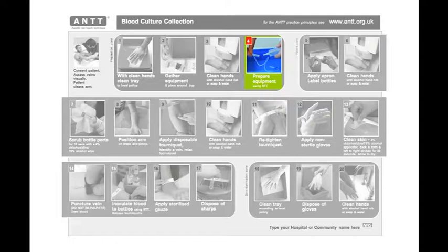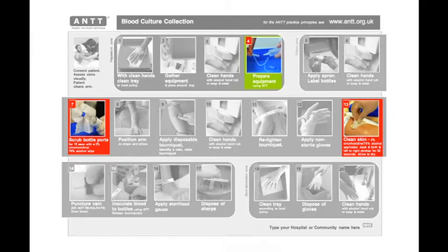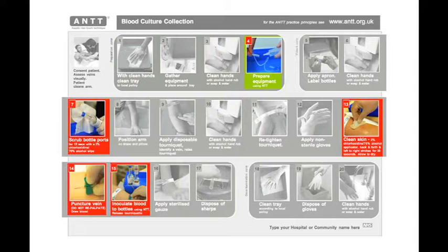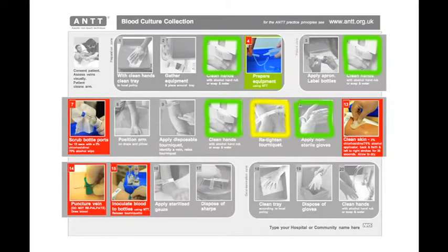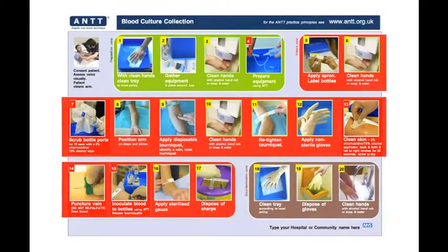The five critical steps are: equipment assembly (Step 7), scrubbing the culture bottle injectable bungs (Step 13), skin preparation (Step 14), puncture of the vein (Step 15), and inoculating the sample into the blood bottles. In ANTT, the maintenance of asepsis is helped by sequencing the low-risk or decontamination steps immediately prior to the most critical steps. Adhering to the sequence of the guideline is therefore very important and mandatory.